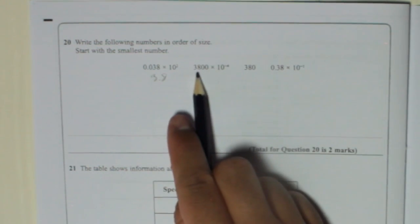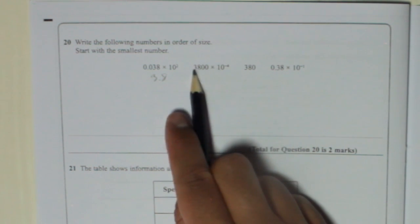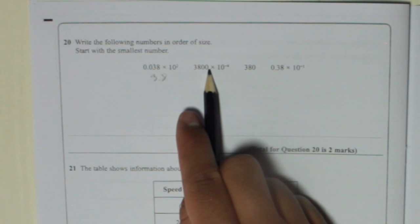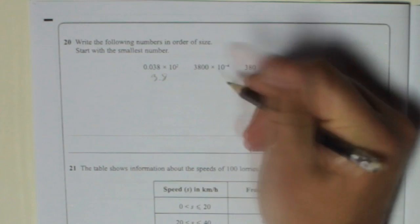Next one is 3800 times 10 to the power of minus 4. That means basically take this number and divide it by 10 four times. So once makes it 380, twice makes it 38, a third time is 3.8, and then the last time makes it 0.38.